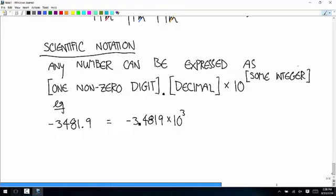And it works with numbers smaller than 1, too, like 0.0087 is equal to 8.7 times 10 to the negative third. So, 10 to the negative third is 1/1,000. Multiply that times 8.7 and you get this.